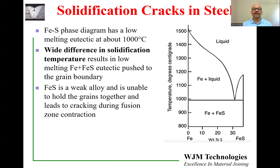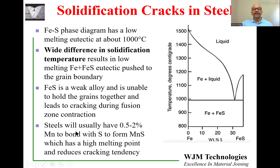When a weld solidifies, there are significant stresses. First, the grains are shrinking due to thermal contraction. Second, the weld itself can undergo distortion, pulling grains away from each other. If there is a thin layer of iron sulfide along the grain boundaries, the grains are easily pulled apart and the separation appears as a crack in the weld. Steels typically contain 0.5% to 2% manganese, specifically to bond with the sulfur — manganese sulfide has a much higher melting point and reduces the cracking tendency. Even so, if there is a substantial amount of sulfur, it is not always possible to avoid solidification cracking.